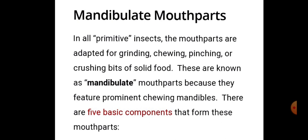In all primitive insects, the mouth parts are adapted for grinding, chewing, pinching, and crushing bits of solid food. सभी primitive कीटों में mouth parts ठोस भोजन के टुकड़ों को पीसने, चबाने, कुतरने और crush करने के लिए adapted होते हैं। These are known as mandibulate mouth parts because they feature prominent chewing mandibles।